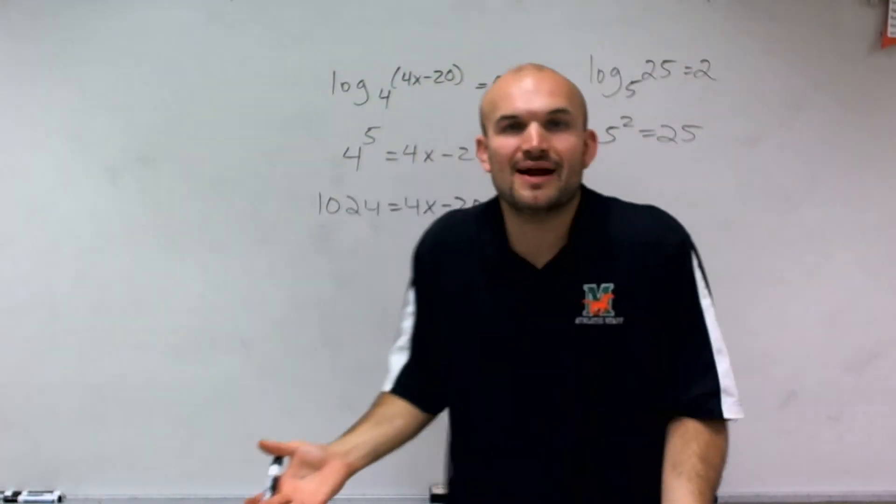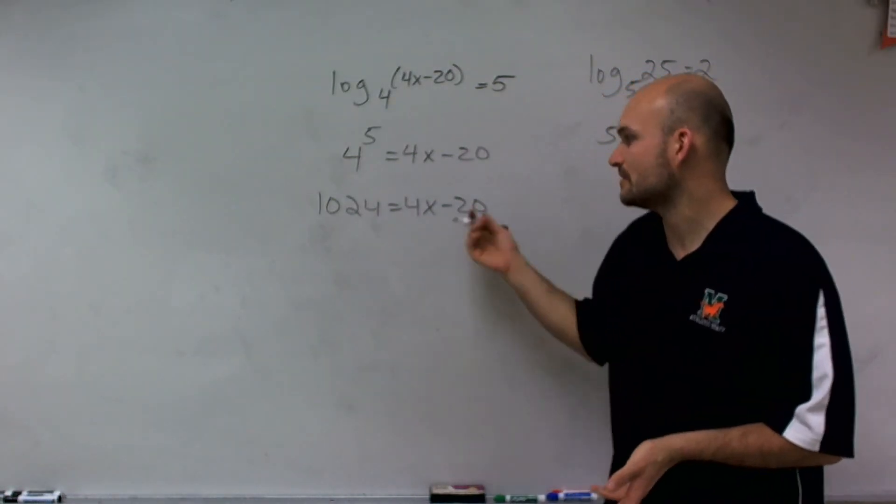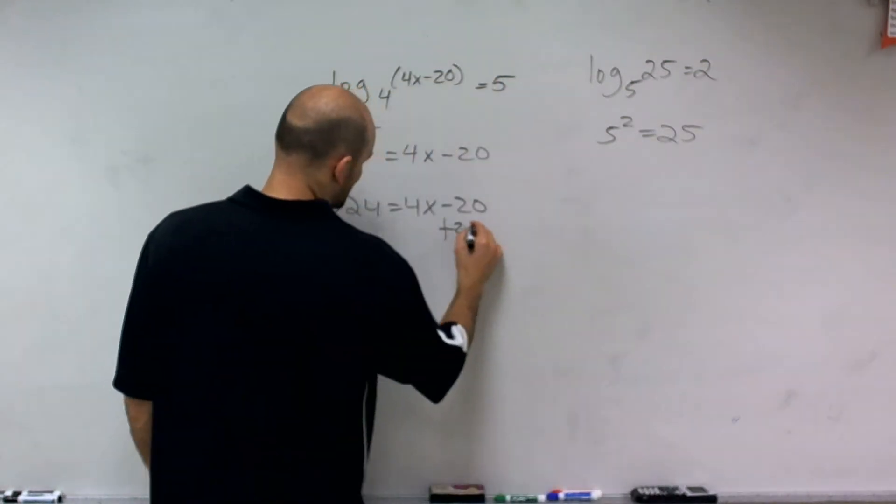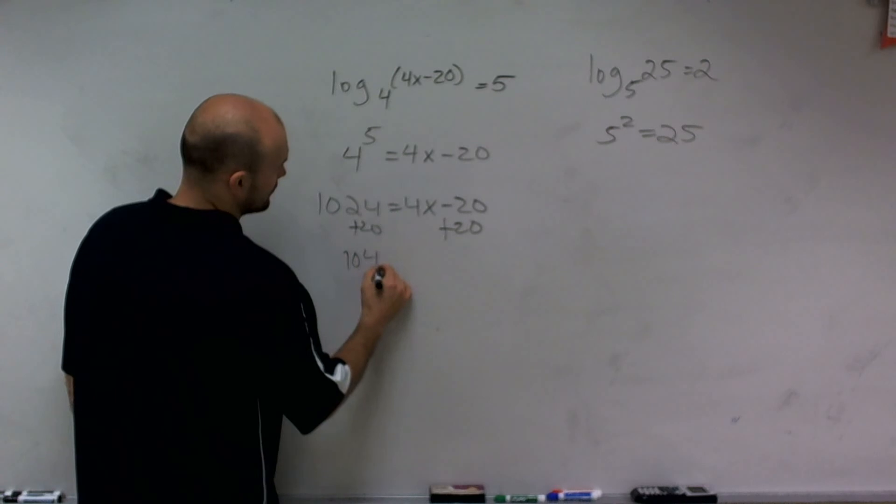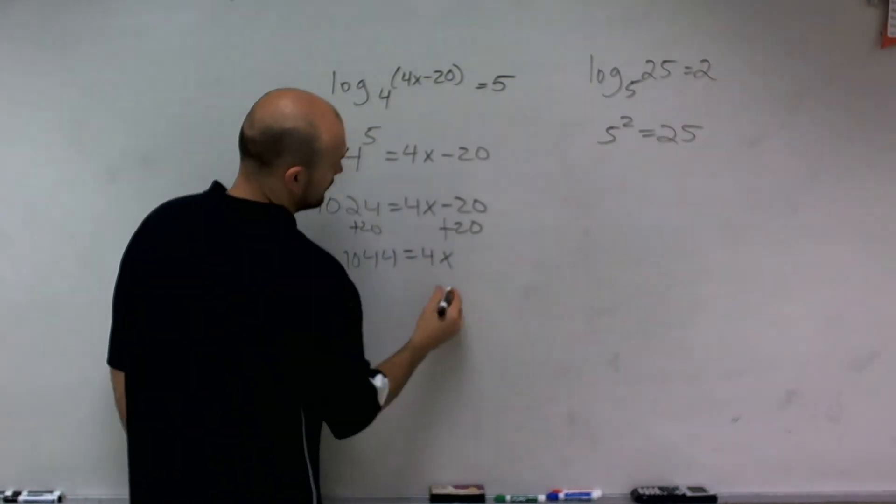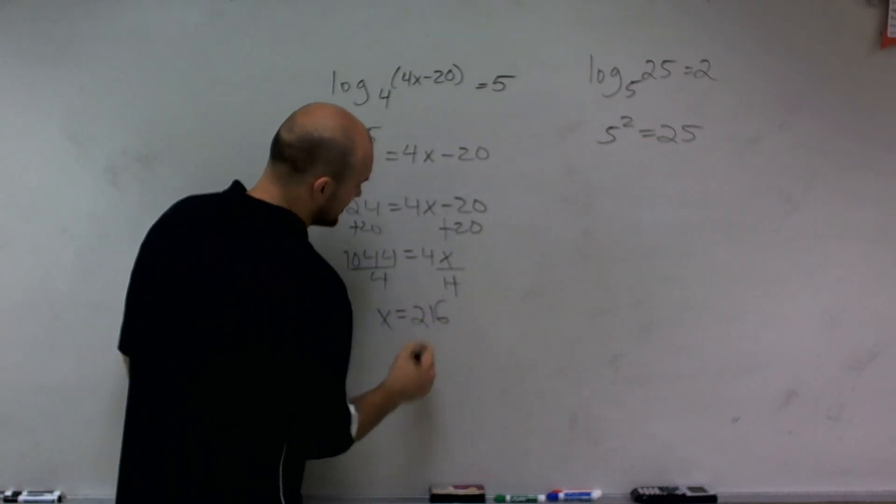So now, to solve for x is pretty basic. It's just using the equation solving we've been working on before. So I just add 20 to the other side by using the addition property of equality, and I get 1044 equals 4x. Divide by 4, divide by 4, and x equals 216.